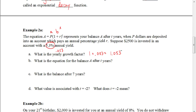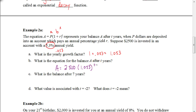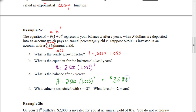For the equation for the balance after T years, replace P with the principal amount: A = 2,500 times 1.053 to the T power. To find the balance after 7 years, put 7 in for T, and we get $3,588.71. Always make sure your answers make sense — if I'm earning 5.3% annually over 7 years, I'm not going to have an astronomical amount of money.